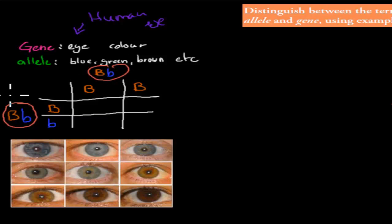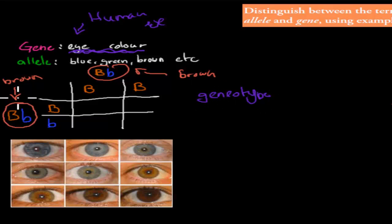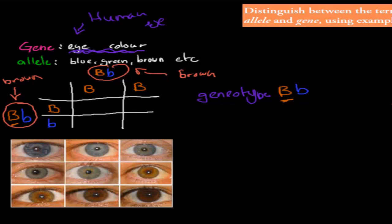For example, if we had two human beings, they both have the phenotype of brown eyes. The gene is a gene that codes for eye colour. Now in this case they both have brown eyes, so their phenotype is brown eyes. But their genotype — what kind of versions of the gene they have — they both have a capital B, meaning the dominant brown allele, and a recessive blue allele as well. So we've got two different alleles, two different versions of that gene.